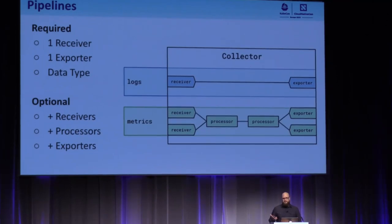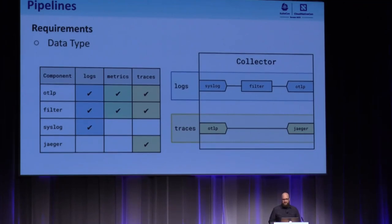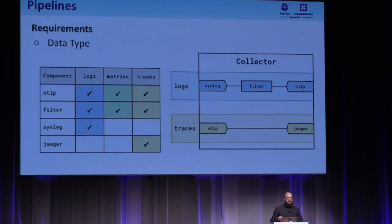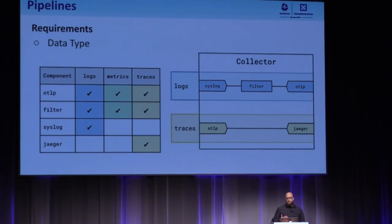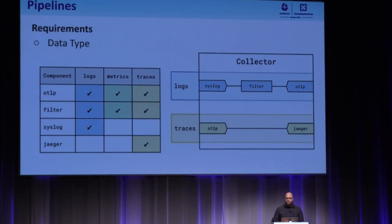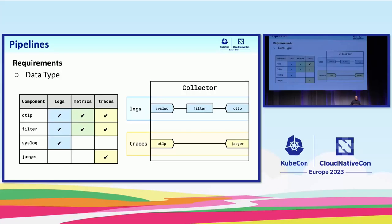The receiver and exporter requirements are probably pretty intuitive — we need to have an input and an output. But the data type requires a little more explanation. The collector supports multiple data types, but a given component may not — it may only support one or two. For example, we have a syslog receiver that only supports logs, or a Jaeger exporter that only supports traces. So by framing a pipeline with a data type, we're adding a lot of clarity about what is expected of the components in the pipeline.